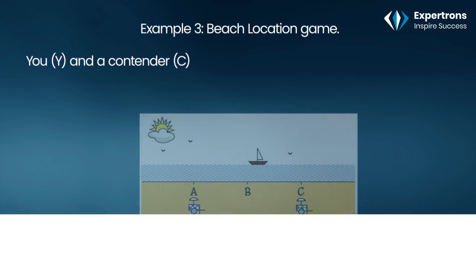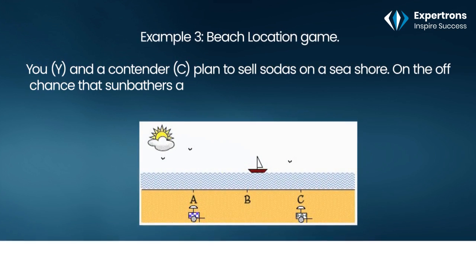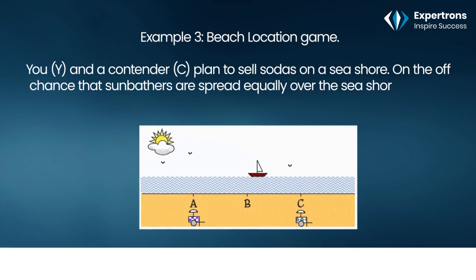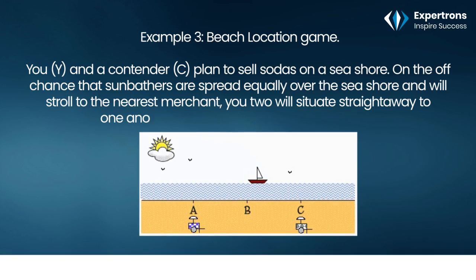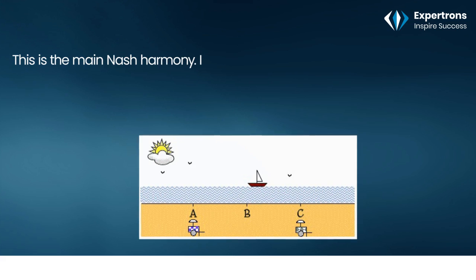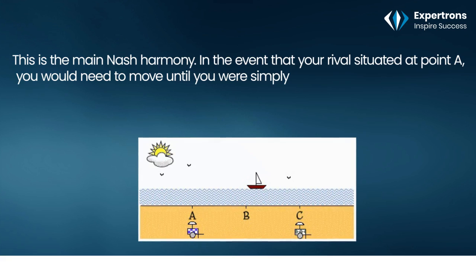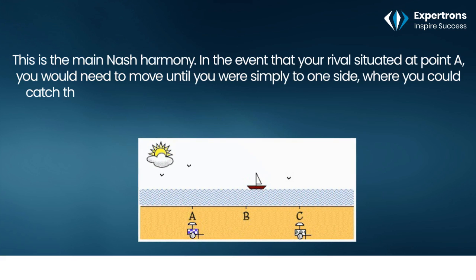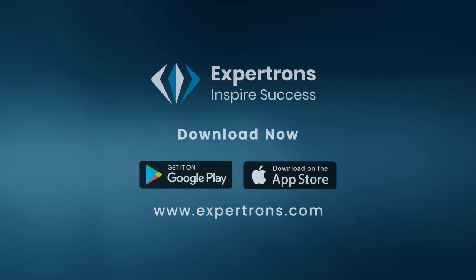Example three: the beach location game. You and a competitor plan to sell sodas on a seashore. If sunbathers are spread equally over the beach and will walk to the nearest vendor, you two will both locate next to one another at the center of the beach — this is the Nash equilibrium. If your rival is located at point A, you would move until you were just to one side, capturing three-fourths of customers. Your rival would then move back to the center, and you would do likewise.